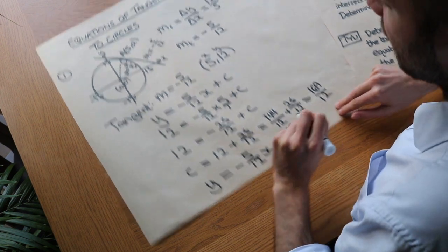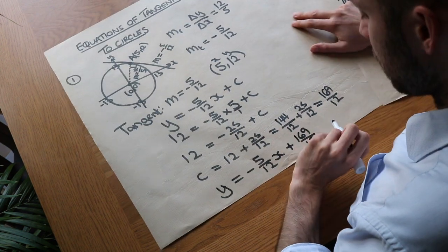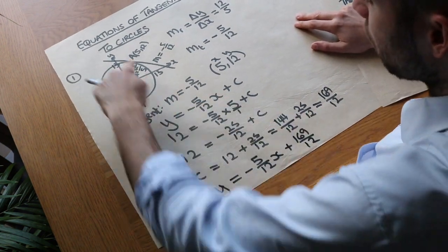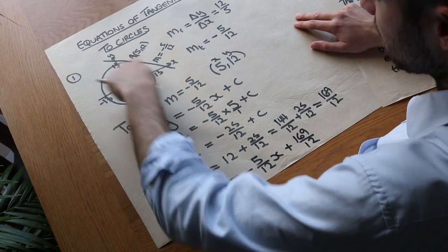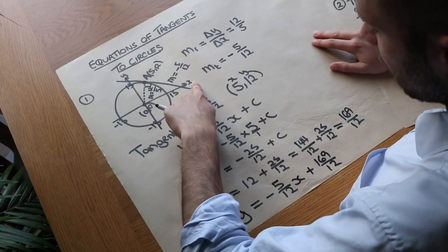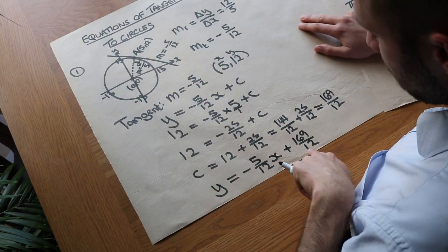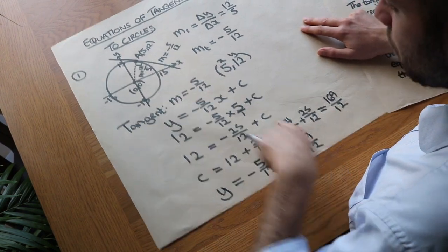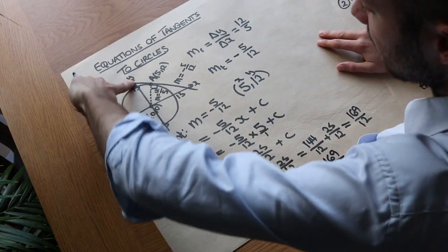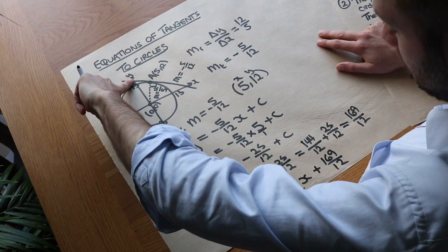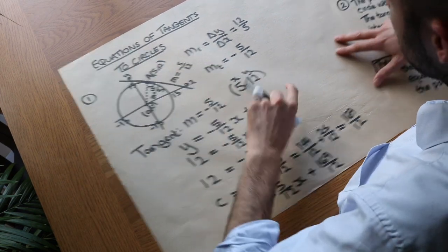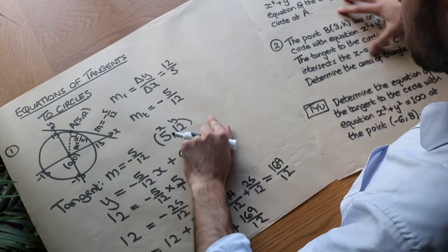Let's check the answer is sensible. We have a negative gradient, which makes sense because the line is going downhill, and we have a positive y-intercept, which indeed looks correct from the diagram. Let's try another example.